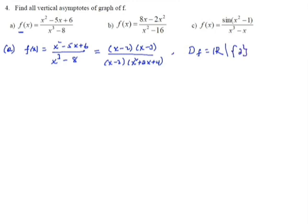Whenever we substitute 2, the function becomes undefined. Every number that makes the function undefined is not necessarily a vertical asymptote — it could be a hole or a vertical asymptote. The simplified form of the given function is f(x) = (x minus 3) over (x squared plus 2x plus 4), but we cannot substitute 2 in the function. We have to restrict the value of x; x should be different from 2.